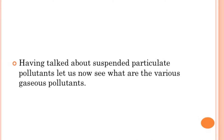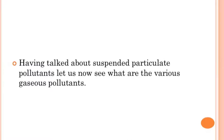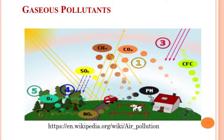Having talked about suspended particulate pollutants, let us now see what the various gaseous pollutants are. In the slide, you can see the various gaseous pollutants: nitrogen oxide, sulphur dioxide, hydrogen sulphide, carbon monoxide, carbon dioxide, hydrogen fluoride, methane, chlorofluorocarbons, unburned hydrocarbons — for example benzene, ethylene, etc. These are all gases that cause air pollution.